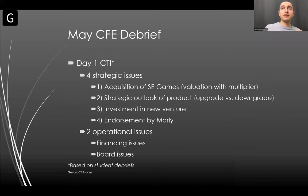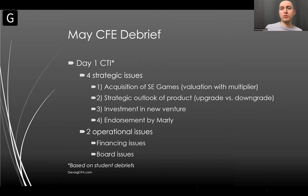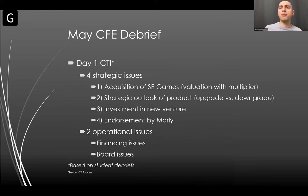Day one of the CFE tests on one case. The case in May was CTI — Created Toi Inc. In September you'll have another case: the Can Do Fitness case or Waste Disposal case. The issues they test you on are pretty similar regardless of which case. You typically get three or four strategic issues, and in May about four strategic issues came up — an acquisition of SE Games, a strategic outlook on a new product, an investment in a new venture, and an endorsement. We also had two operational issues: financing and board issues.